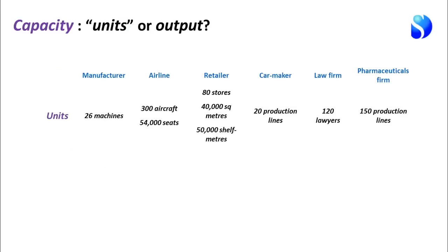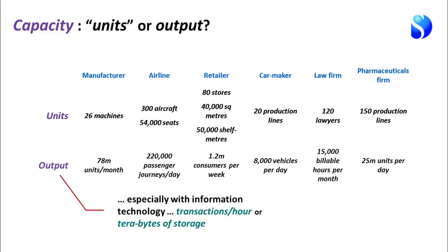In the case of physical capacity, there is a question of how exactly we should specify it. We could list actual numbers of things the business has: the number of machines in a manufacturing company, the number of aircraft in the airline, the number of lawyers in a law firm. But very often we're more interested in output potential — how many units a manufacturer's machines can produce, how many passengers per day aircraft can carry. Particularly in information technology, it isn't helpful to talk in terms of how many servers or routers the company has; what matters is how many transactions per hour the capacity can handle, or how many terabytes of storage there are.